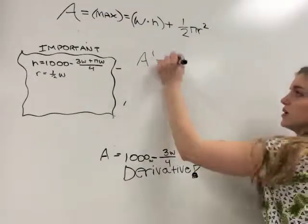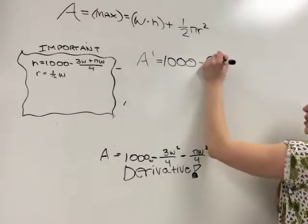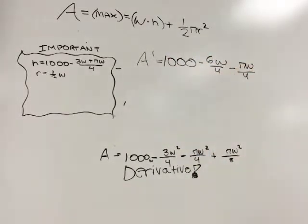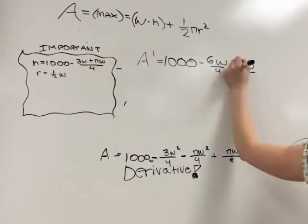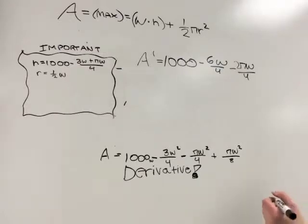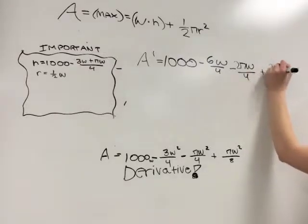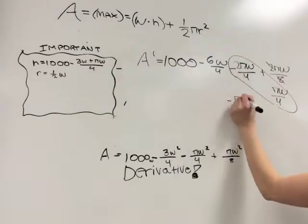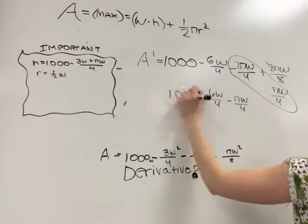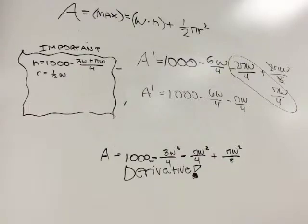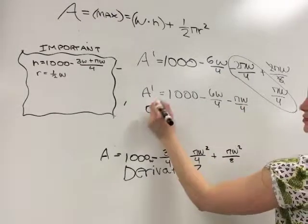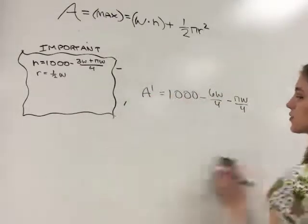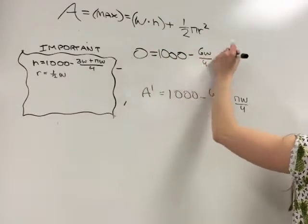Now, we can take the derivative. The derivative will be 1,000 minus 6W over 4 minus 2πW over 4 plus 2πW over 8. Now, we can use a common denominator of 4 and combine those terms.